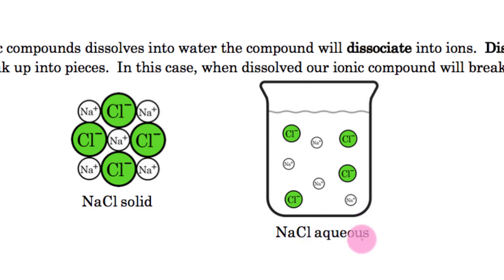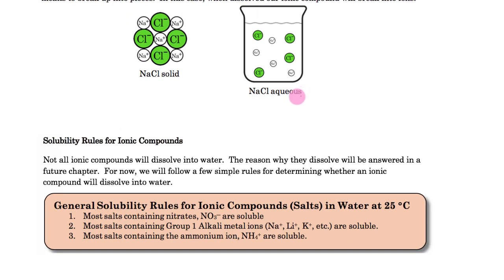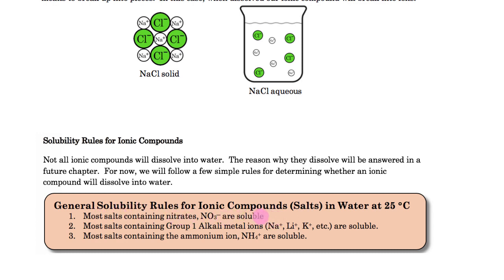You'll see a lot of aqueous solutions where we dissolve ionic compounds in water. But not all ionic compounds dissolve the same way, which is a problem. There are some general rules for determining whether an ionic compound will dissolve in water. Most salts — and 'salt' is just another term for ionic compound — containing nitrates are soluble, meaning they'll dissolve and break up into ions.